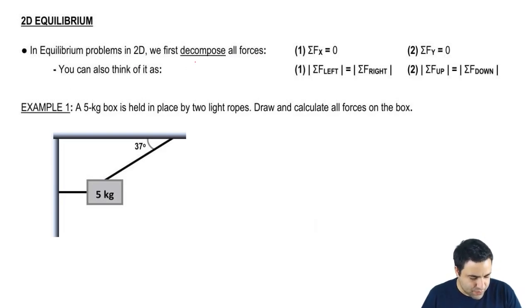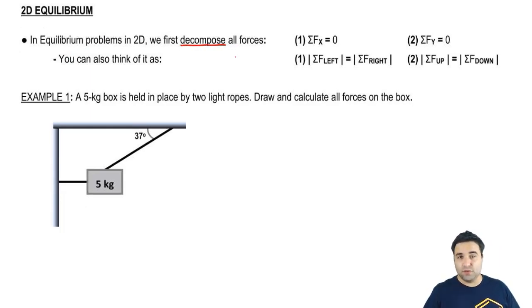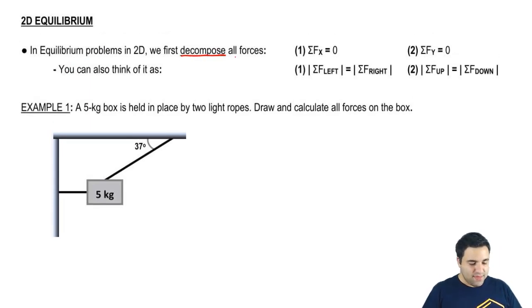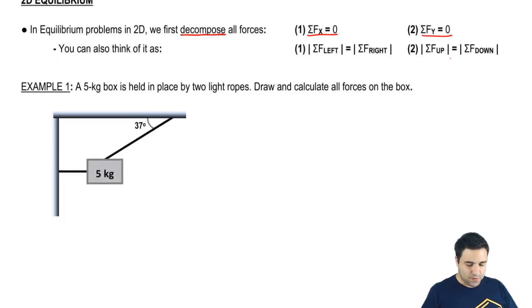The first thing we're going to have to do is decompose all the forces, because at least one of the forces will be at an angle. And then, because we're in equilibrium in both dimensions, I can say that the sum of all forces in the x equals zero, and the sum of all forces in the y equals zero.